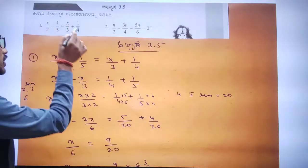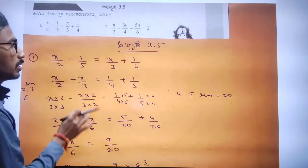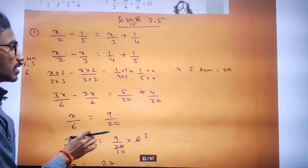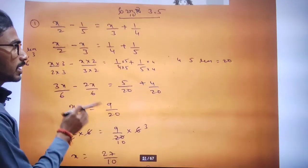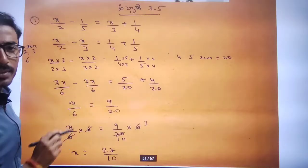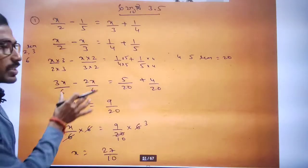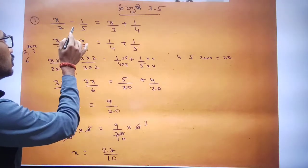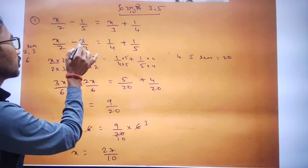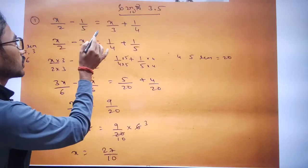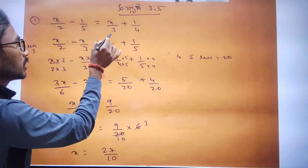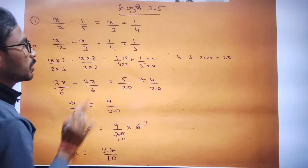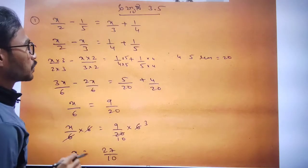I will answer the questions, but first I will explain what the questions are. The equation is: x divided by 2 minus 1 divided by pi is equal to x divided by 3 plus 1 divided by 4.